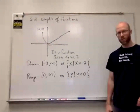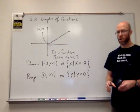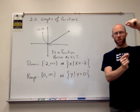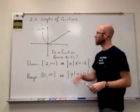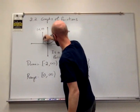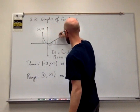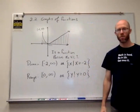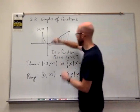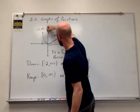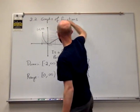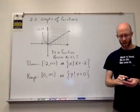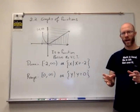So with the domain, it's all values on the X-axis that correspond to points on the graph, and for the range, it's all values on the Y-axis that correspond to points on the graph. It's kind of like casting a shadow on the axis — drop every point down to the X-axis for domain, slide every point over to the Y-axis for range.